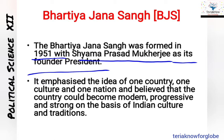In the 1950s, the Jana Sangh remained on the margins of electoral politics, securing only three Lok Sabha seats in 1952 and four seats in the 1957 general election. Its support came mainly from urban areas in Hindi-speaking states like Rajasthan, Madhya Pradesh, Delhi, and Uttar Pradesh, but not in other states. The party's leaders included Shyama Prasad Mukherjee, Deen Dayal Upadhyaya, and Balraj Madhok. The present Bharatiya Janata Party traces its roots to the Bharatiya Jana Sangh.